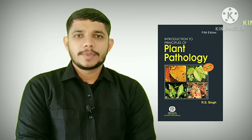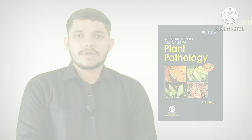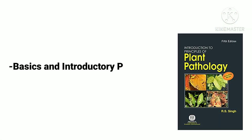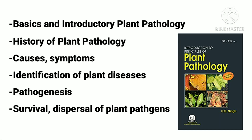The first book is 'An Introduction to Principles of Plant Pathology' by R.S. Singh, fifth edition. This book covers basics and introductory plant pathology along with its history. It also includes causes, symptoms, identification of plant disease, pathogenesis, and survival and dispersal of plant pathogens.